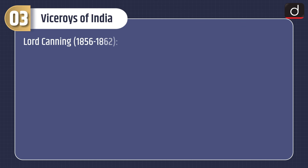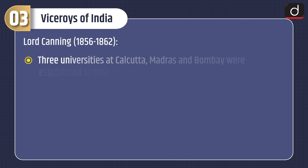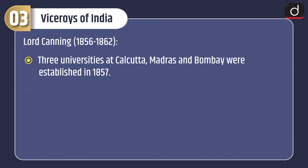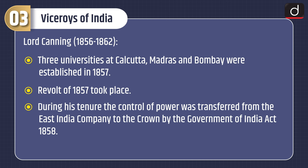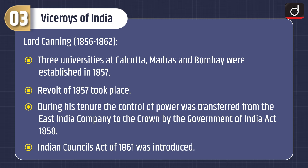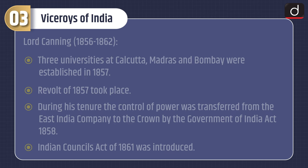Now let's discuss the Viceroys of India. First is Lord Canning, 1856–1862. Three universities at Calcutta, Madras, and Bombay were established in 1857. The Revolt of 1857 took place. During his tenure, control of power was transferred from the East India Company to the Crown by the Government of India Act, 1858. The Indian Councils Act of 1861 was introduced.